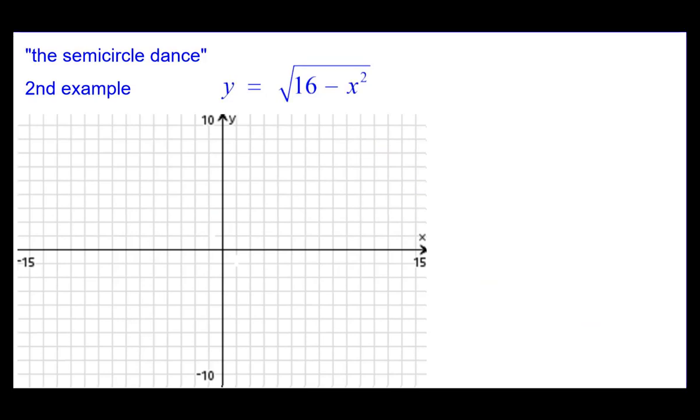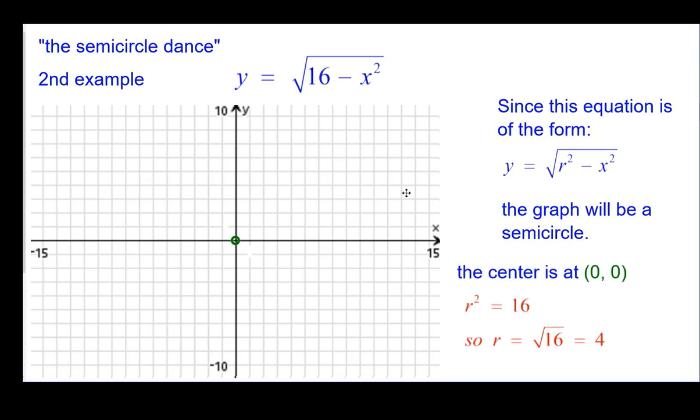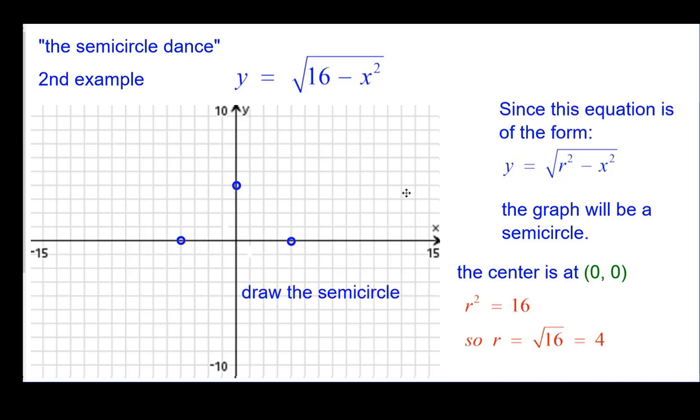We will do a second example because not always is the radius going to be that nice number 5 and get so many Pythagorean triples. This equation is of the proper form. R squared is 16, so the radius is 4, positive 4. The length is positive. And so from the center, we go 4 units in each direction. And so we have those three points. And then we draw and make it look like a semicircle.